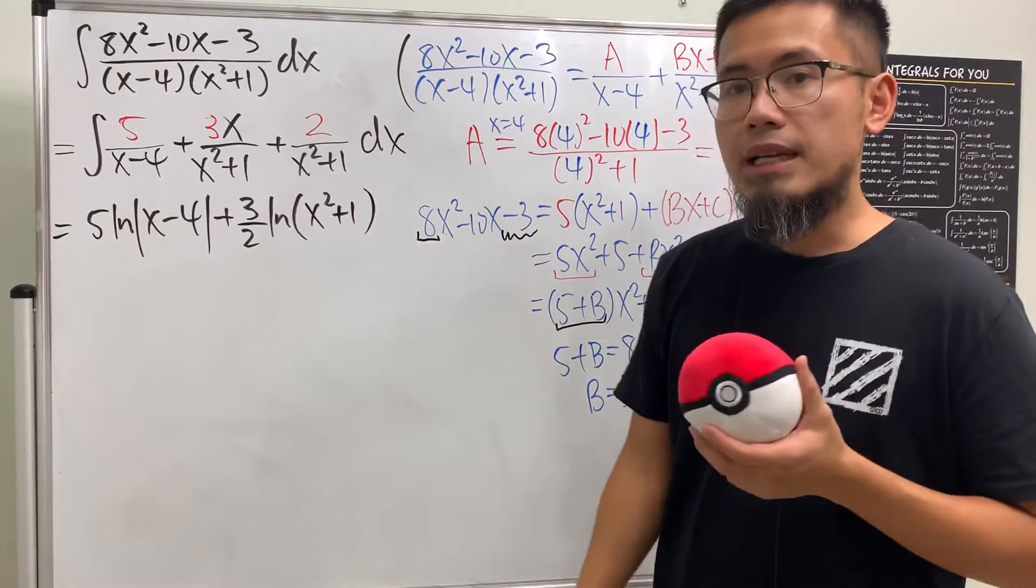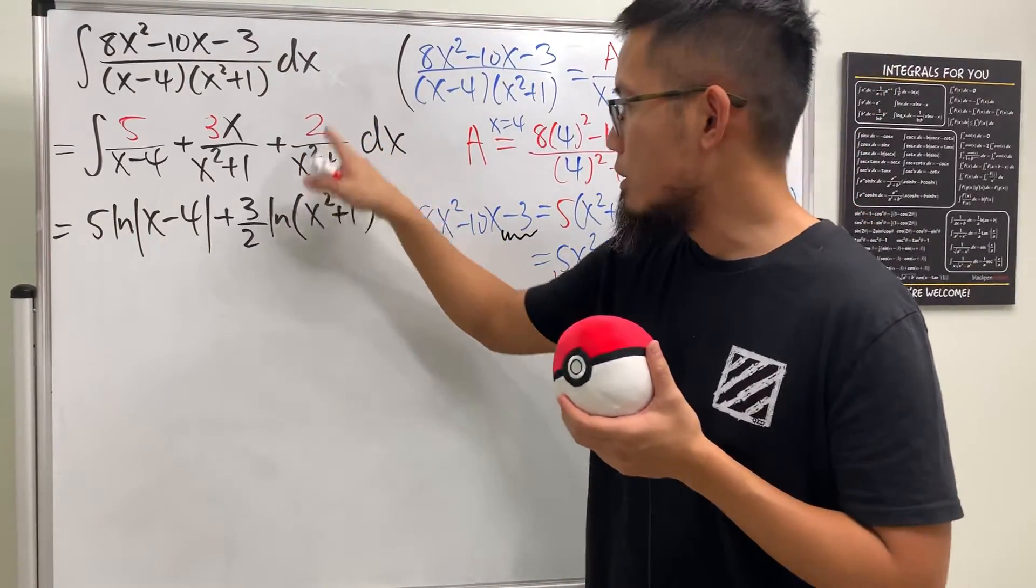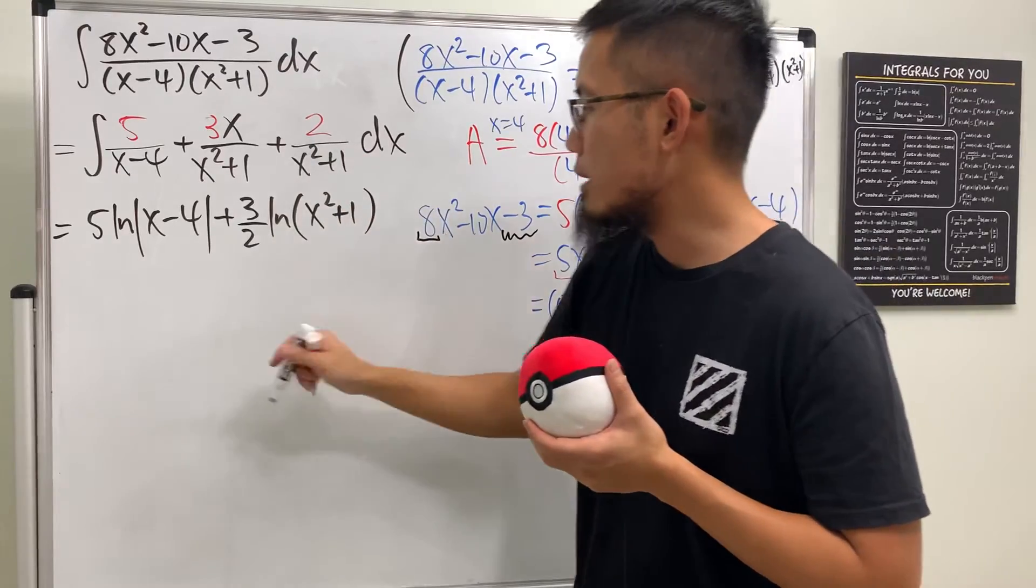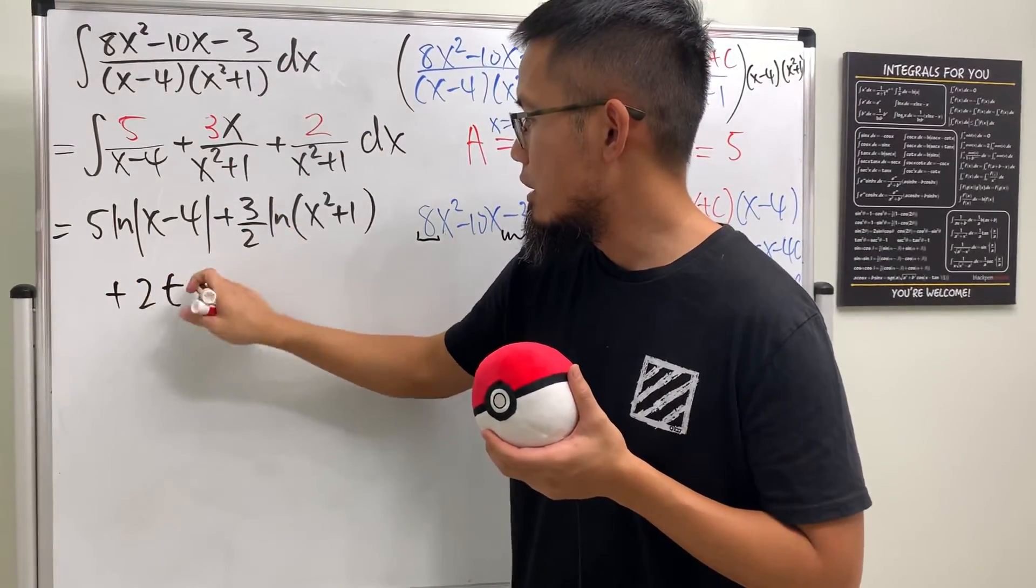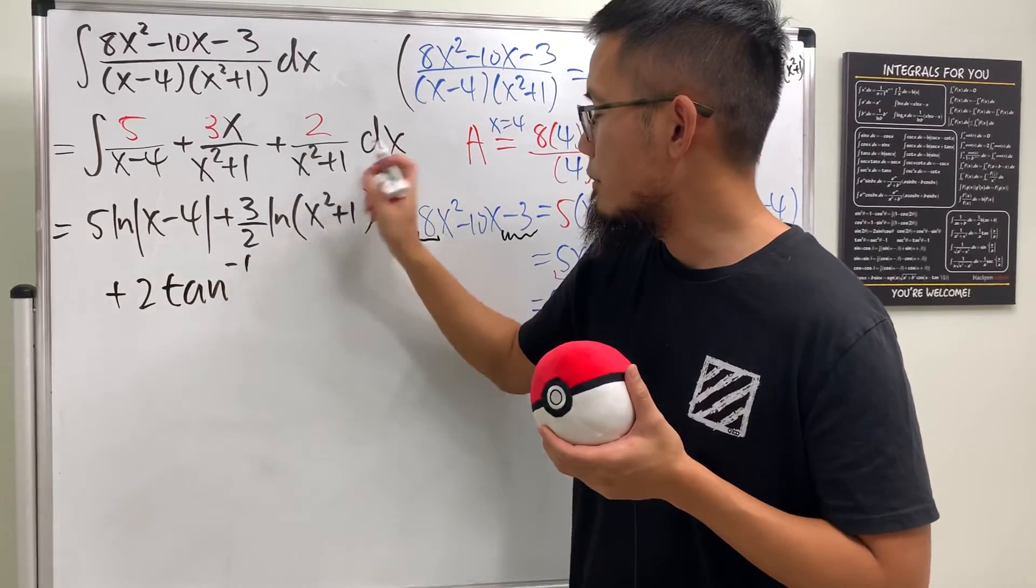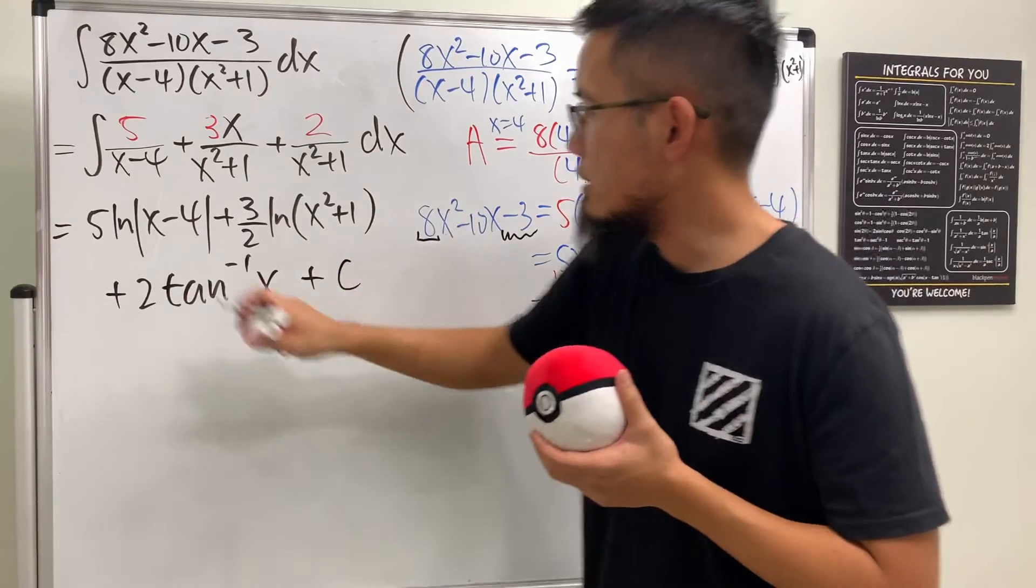Lastly for this one, 2 is just a constant times 1 over (x² + 1). Integrate that, we just have 2 and the result is the inverse tangent of x, just like that. So all in all, that's it.